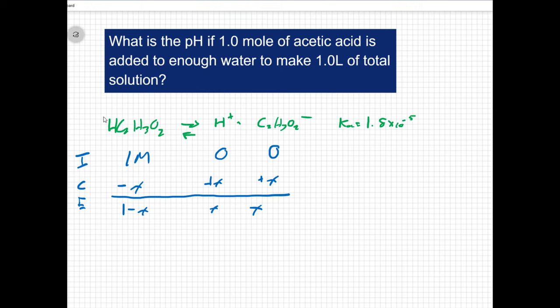So when I look at my Ka value here, Ka is going to equal x squared over 1 minus x. We can make this assumption that x is much smaller than 1 because our Ka value is so much smaller than our initial concentration. So when I do that, I can ignore this minus x part.